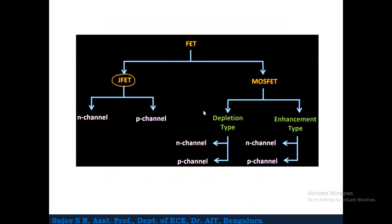Looking at the classification of FETs, broadly we categorize them into two types: JFET, that is Junction Field Effect Transistors, and MOSFET, Metal Oxide Semiconductor Field Effect Transistors. JFET is classified as N-channel and P-channel. MOSFET is classified as depletion type and enhancement type MOSFET, each having N-channel and P-channel variants. In this lecture, I am going to discuss JFET — both N-channel and P-channel.